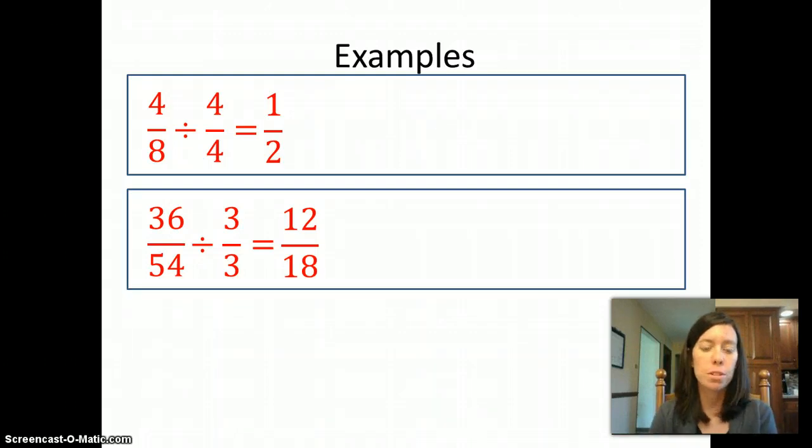So let me think of something that goes into both 12 and 18. Again, there are a lot of choices, but I'm going to pick 3. 3 goes into both. Divide 12 by 3 and divide 18 by 3. I get 4 over 6.